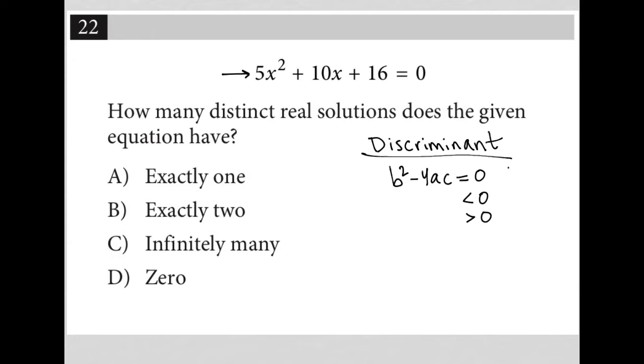If it's equal to zero, we have one distinct real solution. If it's greater than zero, we have two distinct real solutions. And if it's less than zero, we have none. There are no distinct real solutions.